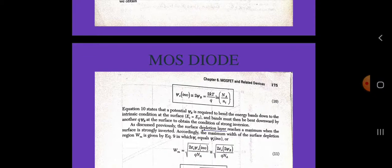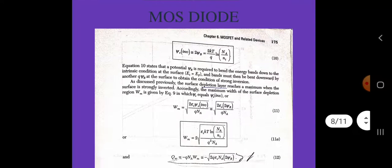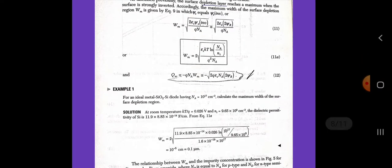As discussed previously, the surface depletion layer reaches a maximum when the surface is strongly inverted. Accordingly, the maximum width of the surface depletion region Wm is given when psi_s equals psi_s(inversion): Wm equals square root of (2 epsilon_s psi_s) divided by qNa, which is nearly equal to square root of (2 epsilon_s times 2 psi_B) divided by qNa. So Wm equals 2 times square root of (epsilon_s kT ln(Na/ni)) divided by q squared Na. Qsc equals minus qNaWm, which is nearly equal to minus square root of (2qNa epsilon_s times 2 psi_B).